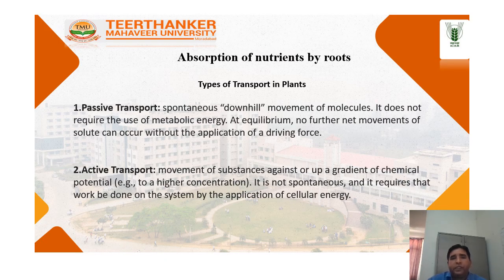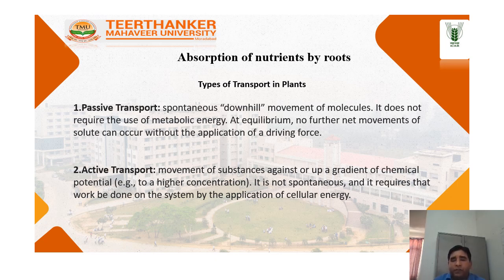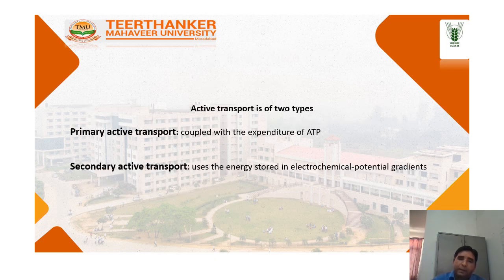Now we can briefly see how these nutrients are absorbed by the plants. There are two types of transport: passive transport and active transport. Passive transport is a spontaneous, downhill movement of molecules and does not require any metabolic energy. Active transport requires the expenditure of metabolic energy in the form of ATP or other forms. Active transport is further divided into primary active transport, coupled with ATP expenditure, and secondary active transport, coupled with energy stored in the electrochemical potential gradient.